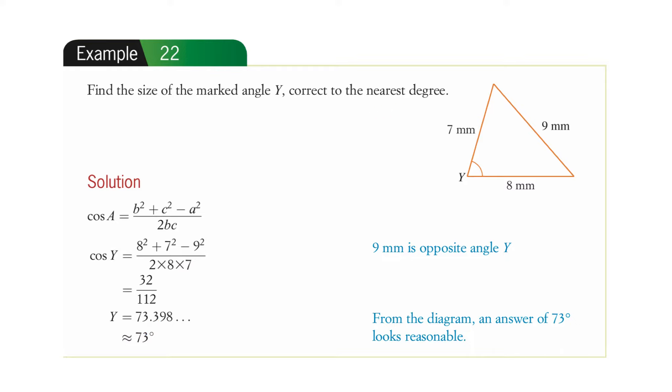And it says to the nearest degree, so that 73 degrees is the nearest degree. And of course, I like this. This is great that they remind you to double check if it makes sense. From the diagram, an answer of 73 degrees looks reasonable. It's not more than 90, so it's an acute angle.